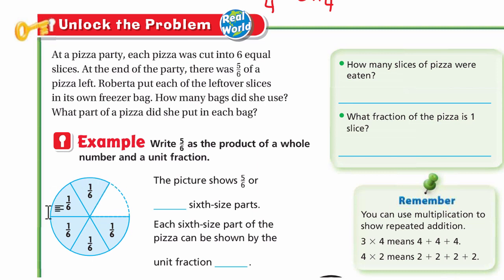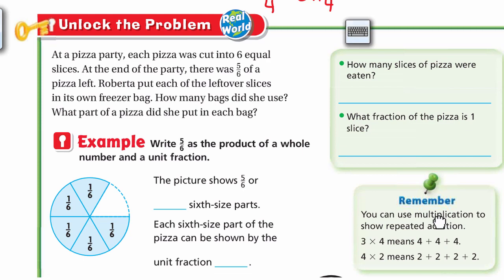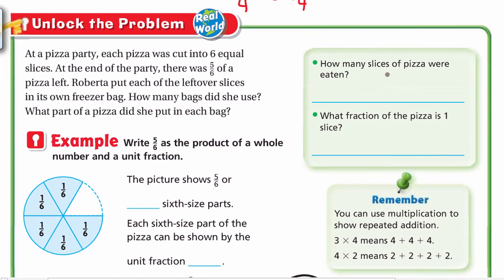At a pizza party, each pizza was cut into 6 equal slices. At the end of the party there was 5/6 of a pizza left — that's 5 slices, each one is 1/6. Roberta put each of the leftover slices in its own freezer bag. How many bags did she use, and what part of a pizza did she put in each bag? There was one slice per bag, and since the pizza is cut into 6 equal parts, each slice is 1/6.